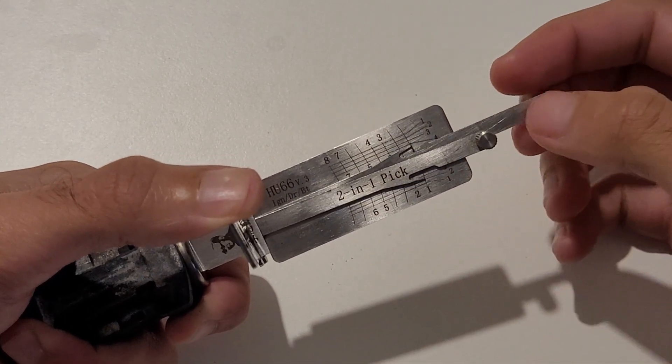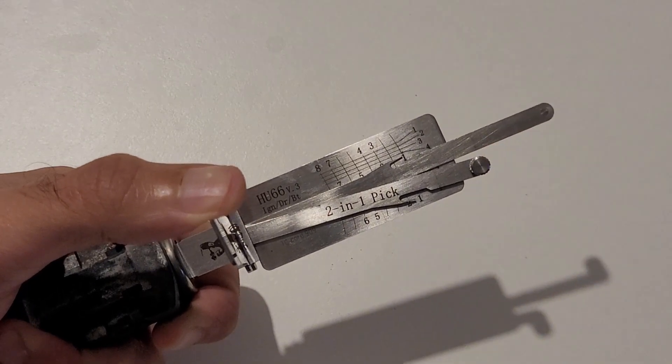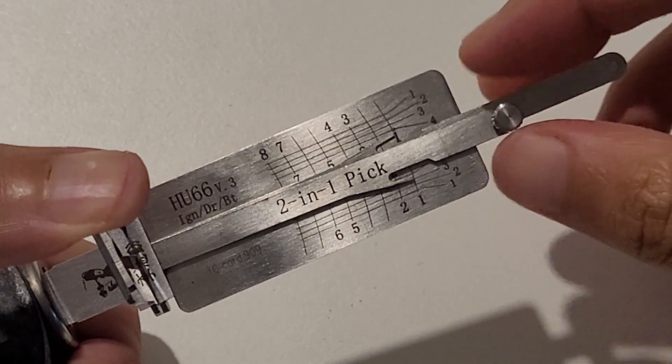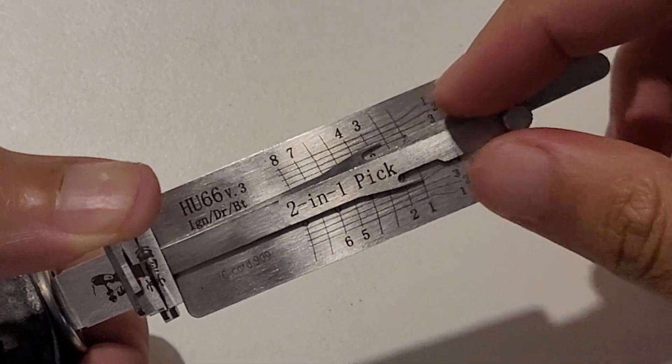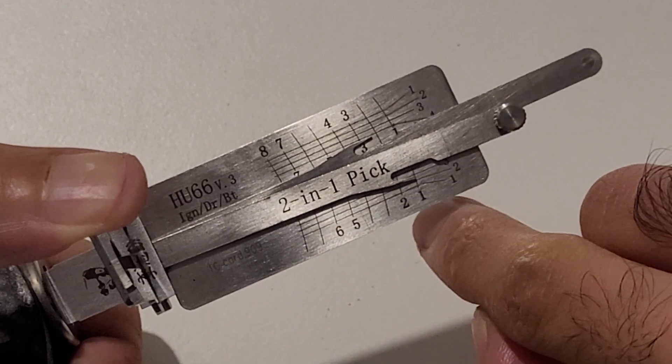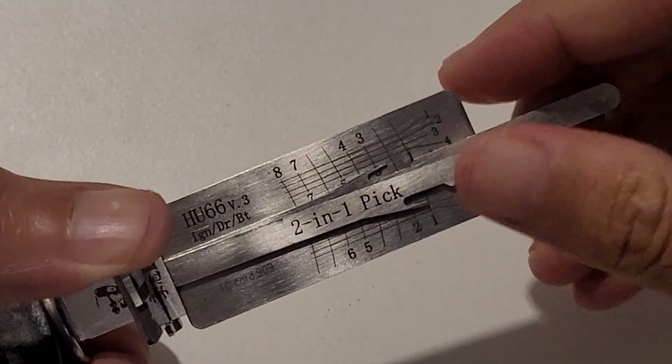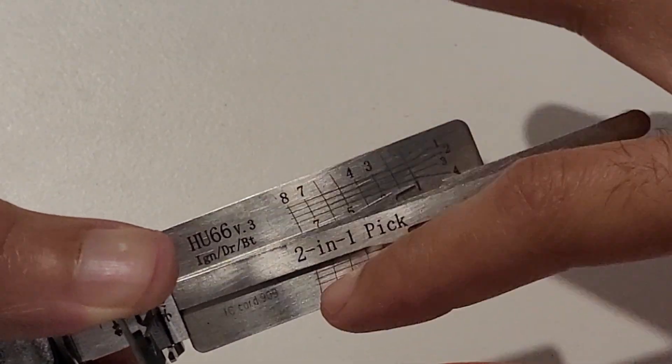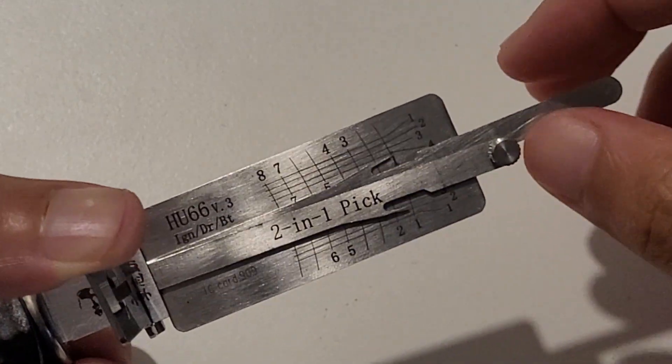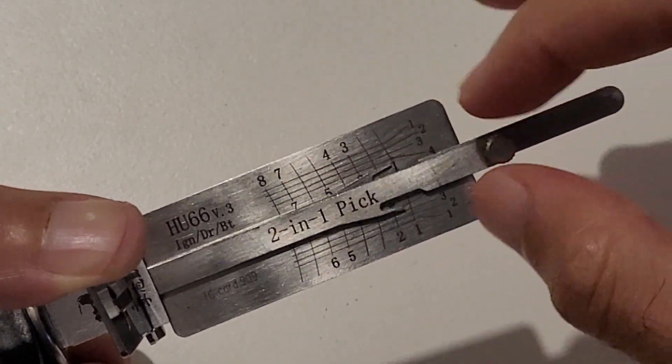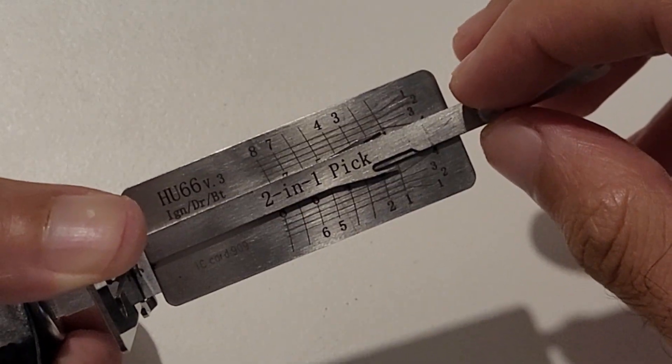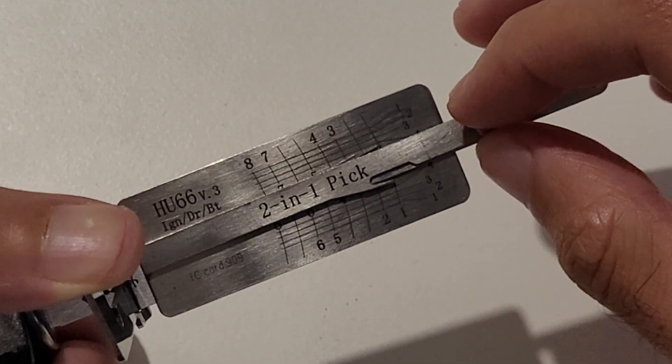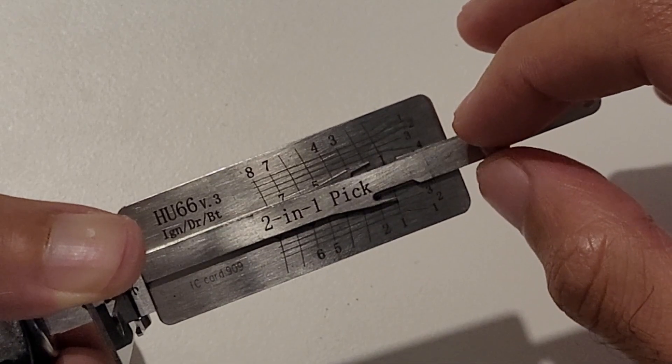Before you even try and move any of the wafers, you want to just take each arm and move along the pins. The pins are numbered here: on the bottom we've got one to six, and the top we've got three to eight. Those don't actually correspond to where the pins actually are—they are just labeled on opposite sides for clarity. Take any of the arms and just go along the tool, moving it up and down to feel if there is a pin on that number.